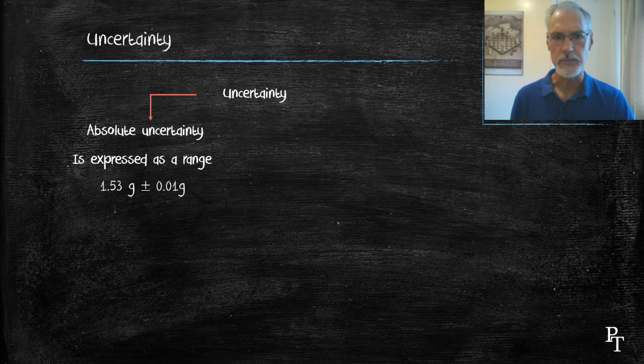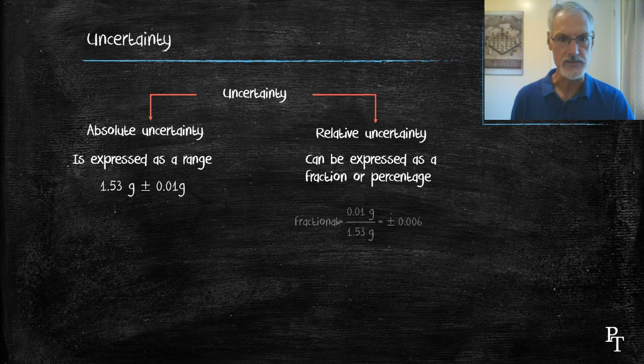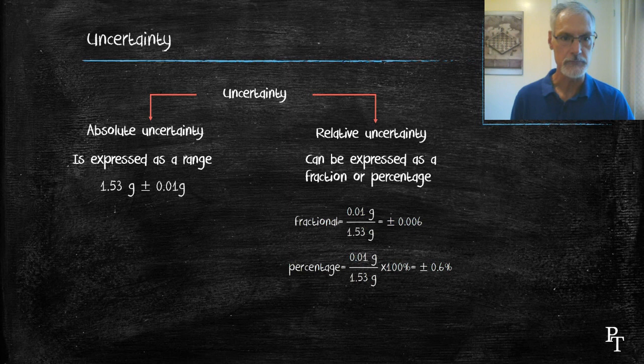Uncertainty can also be expressed in relative terms. Those relative terms can either be as a fraction or as a percentage. And here you see how we obtain it. We take the absolute certainty and we divide it by the reading. And then we express it as a fraction or multiply that fraction by 100 and come up with a percentage uncertainty.